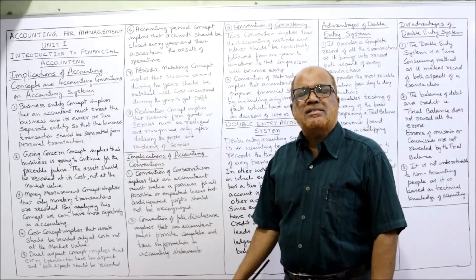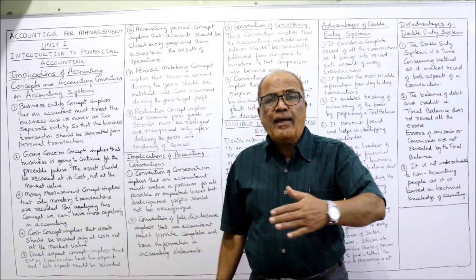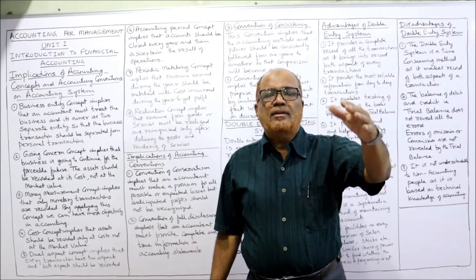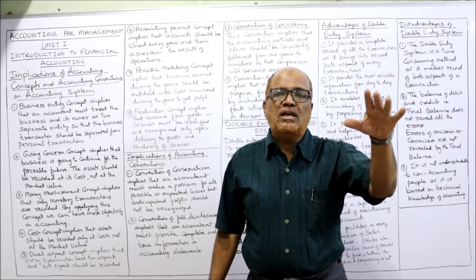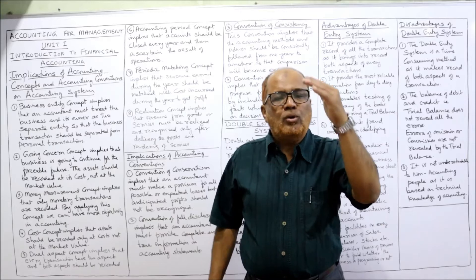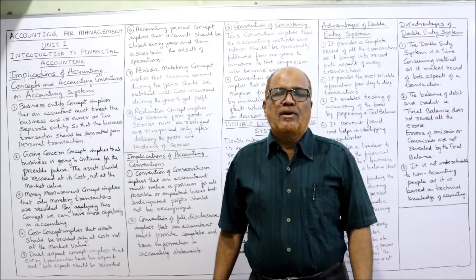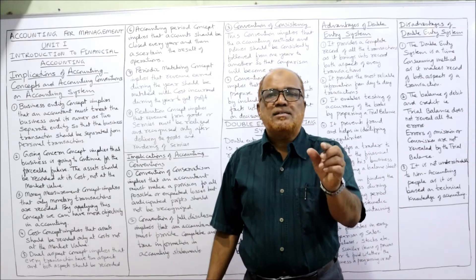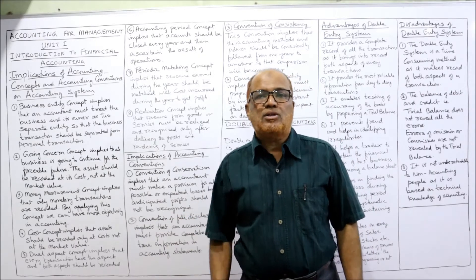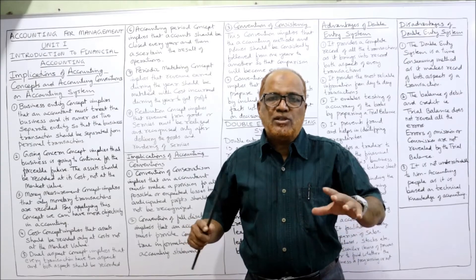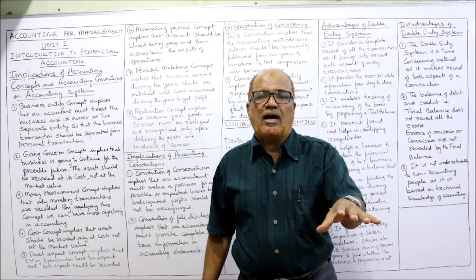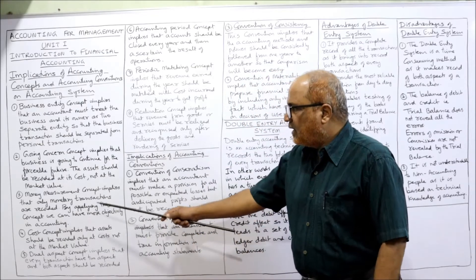The second is the going concern concept, which says the business is going to continue for the foreseeable future. There is neither the intention nor the necessity of the owner to stop the business. From that point of view, assets are recorded at cost and book value, not at market price. The market price may change, but assets will be recorded at cost and carrying value.